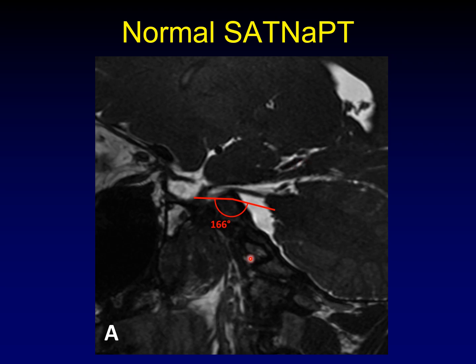This is a steady state free precession sequence — you might call it KISS or Fiesta depending on the manufacturer — and it is performed natively in the sagittal plane. You can do this measurement with reformatted images, but some of the smaller structures you're looking for may be difficult to appreciate if you don't acquire these in the sagittal plane, which is why at my institution we always do three plane imaging with steady state free precession sequences when analyzing these patients.